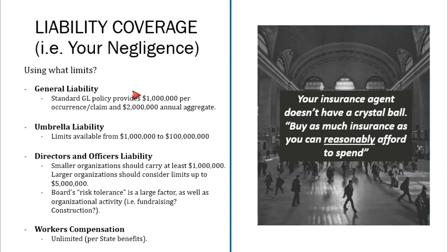Directors and officers liability tends to start at $1 million. Depending on your organization's size, assets, and payroll, you should consider a D&O policy up to $5 million or higher. Sometimes organizations in a capital campaign or doing construction might carry a higher policy during those times, as the risk of poor decisions or claims could be elevated. Workers' compensation is straightforward because there is no limit — the statutory benefits are unlimited.